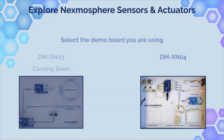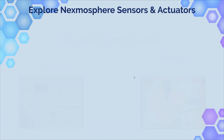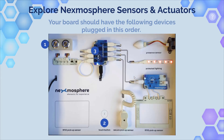Today I have the DMXN04 board, which is the one here on the right side. Later we will add the XN03 and maybe XN02 in the next versions of the sample, depending on the demo board you may have got from Nexmosphere. So let's select number four, which is the one we have here, and go through the different elements on this board.